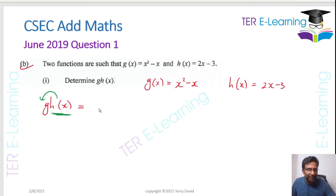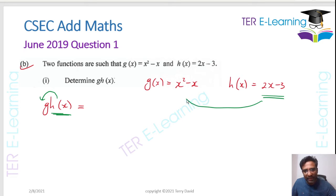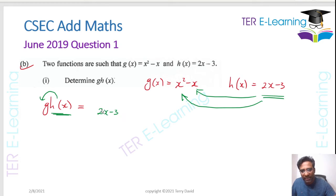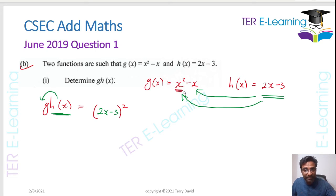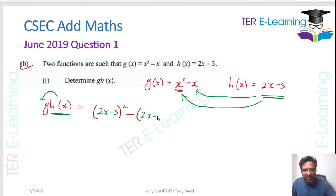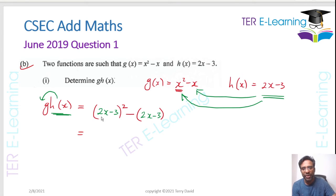So for g(h(x)), we take h(x) = 2x − 3 and substitute it in place of x in g(x) = x² − x. That gives us (2x − 3)² minus (2x − 3). We need to expand (2x − 3)², which is the same as (2x − 3)(2x − 3), minus the bracket (2x − 3).